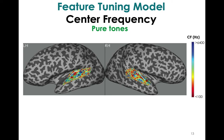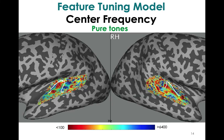Looking at the center frequency parameter for the pure tones on an inflated brain within our region of interest — with Heschl's gyrus outlined in each hemisphere denoting roughly where the primary auditory cortices are — this follows the high to low to high gradient reversal of traditional tonotopy. If you find the big red patch in the middle, you'll see it's flanked by blue patches — that's the high to low to high mapping. There are other smaller reversals as well, which begin to become apparent at the individual subject level at high resolutions, but we'll focus on the main one.